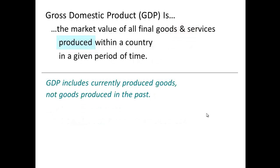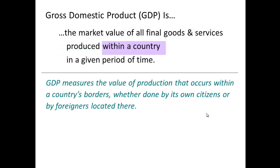'Produced here' just means made — it has to be made; it can't be a thought or an idea. And 'within a country' means within the geographical borders of that country. So if we were talking about the GDP of the United States, it would be the contiguous 48 states, the mainland, and Hawaii and Alaska. Anything made in the US would be counted in GDP, whether it was made by US citizens or by legal immigrants.